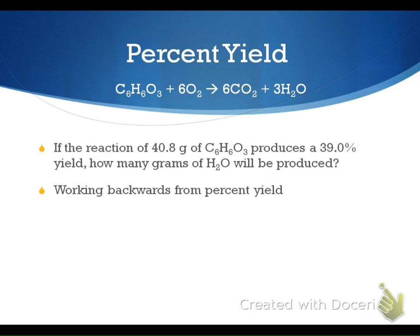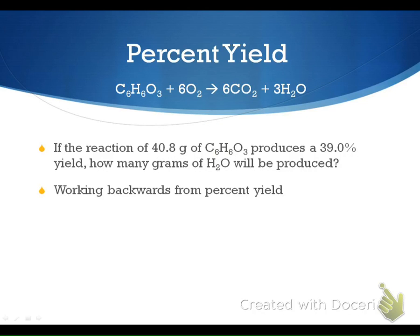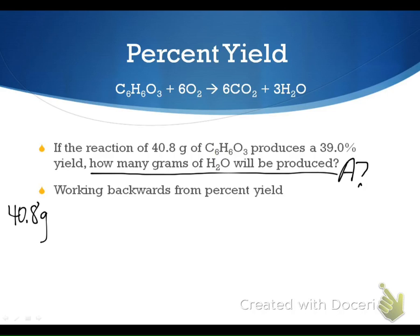Now we're going to start with percent yield and work backwards using the same balanced chemical equation. We have a 39.0% yield, and we know how much we started with. We want to find how many grams of H₂O will actually be produced. We're missing our theoretical yield, so we still have to do our T-chart starting with 40.8 grams to find the theoretical yield first, then we'll work with our 39%.